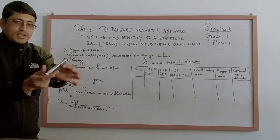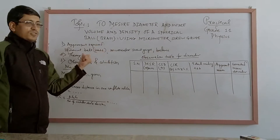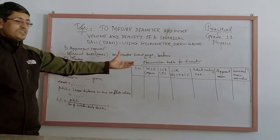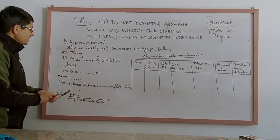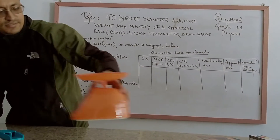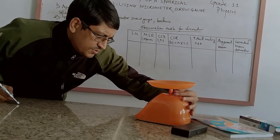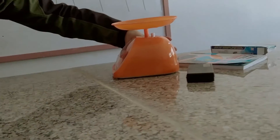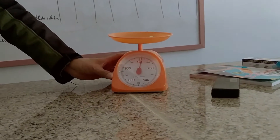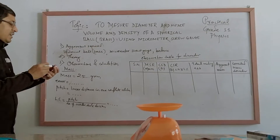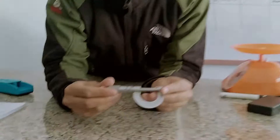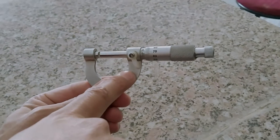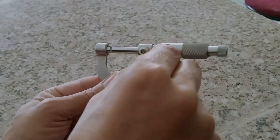The formula will be treated using the micrometer screw gauge. This is the micrometer screw gauge — this is the spindle, which we will have to tighten.